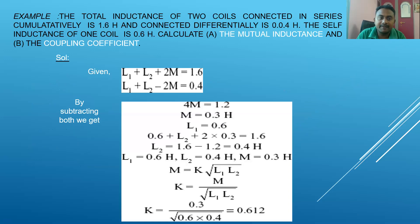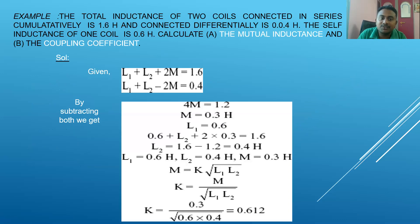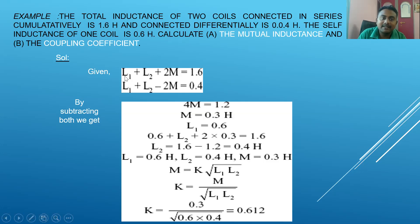The first problem given is: the total inductance of two coils connected in series cumulatively (aiding) is 1.6 H, and reconnected differentially (opposing) is 0.4 H. The self-inductance of one coil is assumed as L1 = 0.6 H. Our objective is to find the mutual inductance M and the coefficient of coupling k.